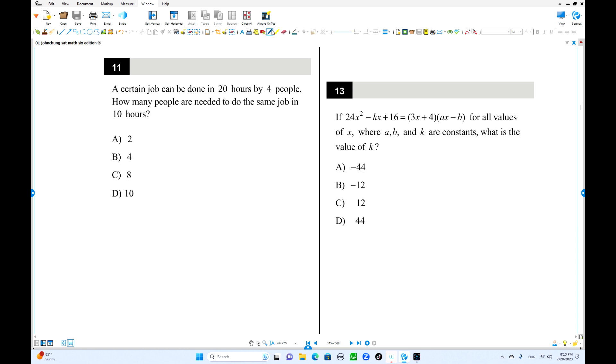Number 11, a certain job can be done in 20 hours by 4 people. How many people are needed to do the same job in 10 hours? Okay, 10 hours is what? Half of this one. To reduce to the half of that hour, we need what? Double people. That's it. So 8 people is the answer.